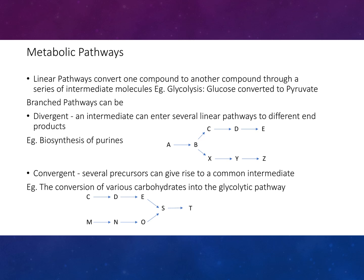Convergent branch pathways occur when several precursors give rise to a common intermediate — for example, the conversion of various carbohydrates into the glycolytic pathway.